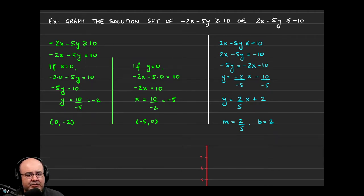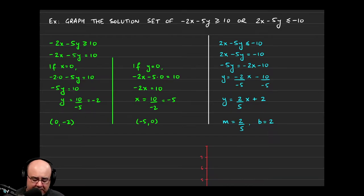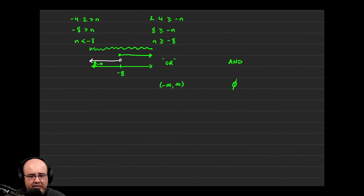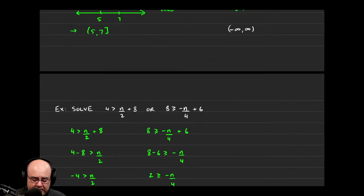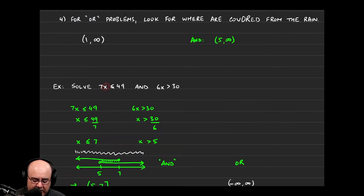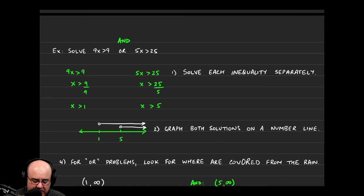All right, guys, last couple of examples in the section. So let's say we're asked to graph the solution set of negative 2x minus 5y is greater than or equal to 10, or 2x minus 5y is less than or equal to negative 10. The first thing I want you to observe is that there are two variables here in these compound inequalities. All the ones we've done in the past had just a single variable x.